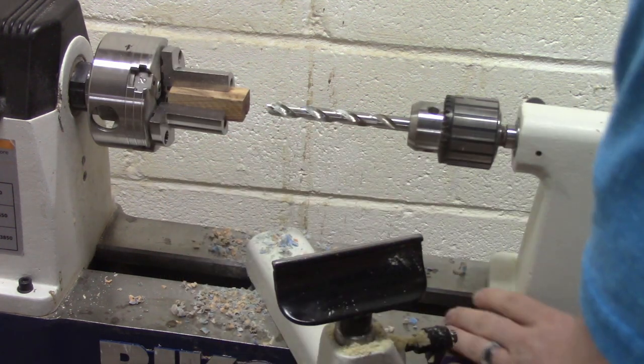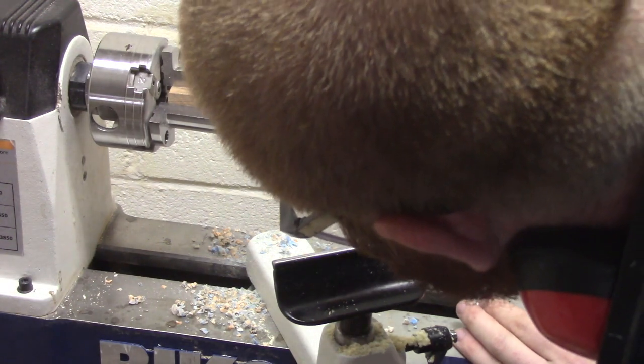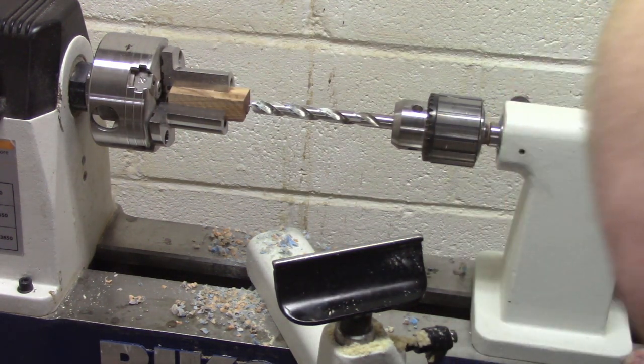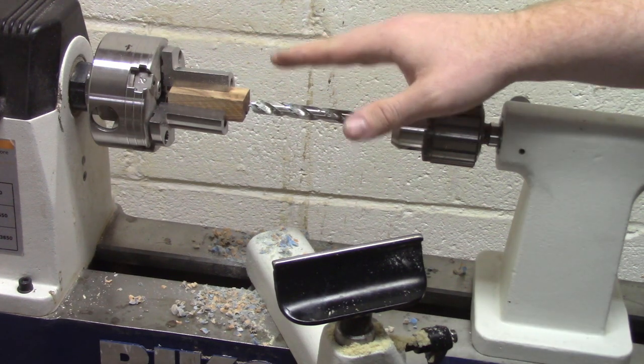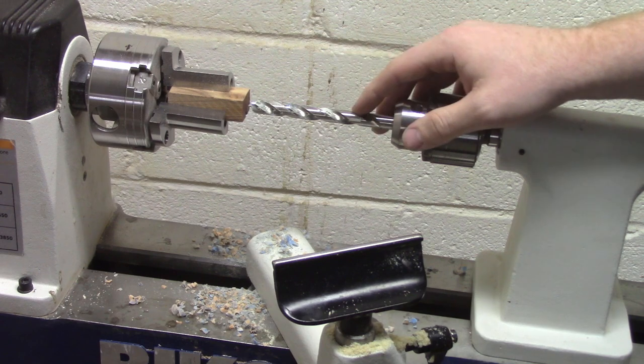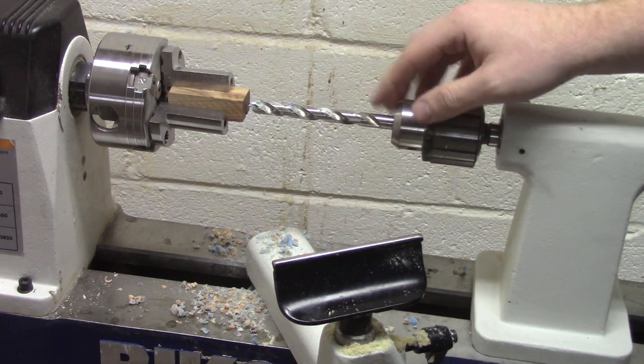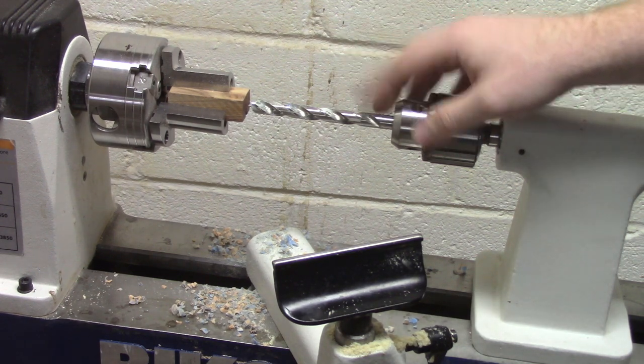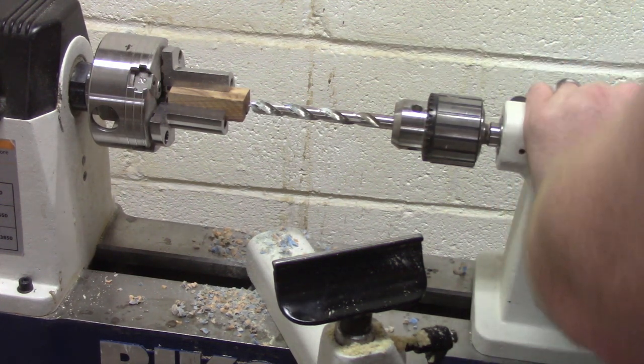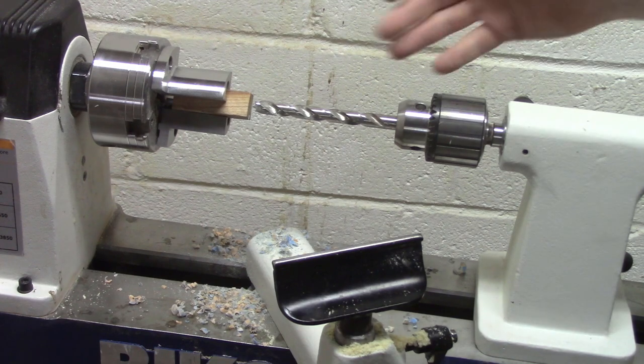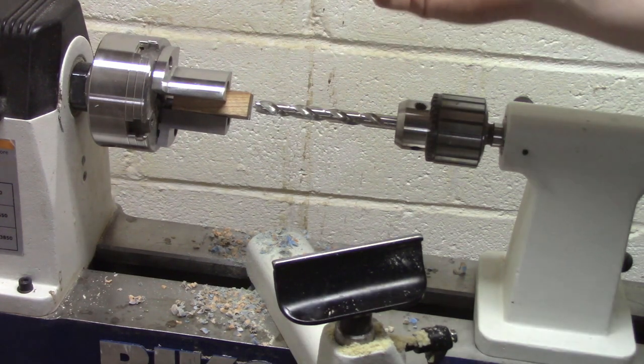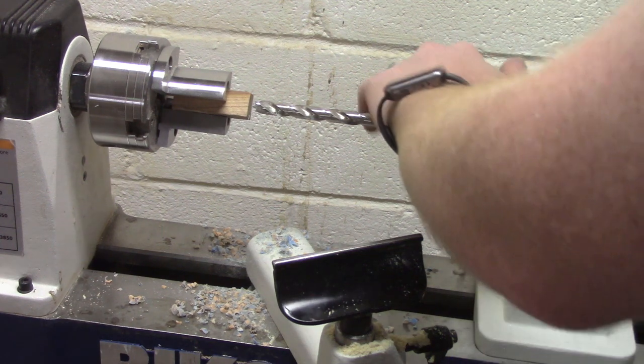Now another thing to keep in mind is I'm drilling these for Sierra style pens, so this drill bit is a 27/64 inch. The bit that you're going to use is going to be dependent on the kit that you use. So that's one thing that you're going to need to pay attention to. Same procedure as the resin blank - clear the chips frequently to avoid building up heat, and we're good to go.